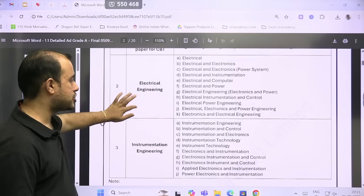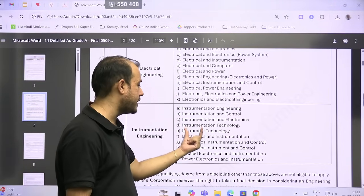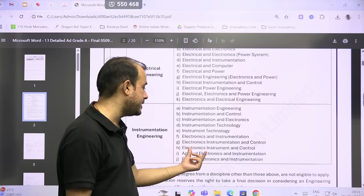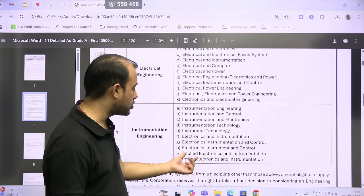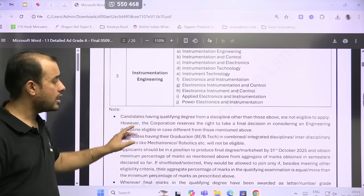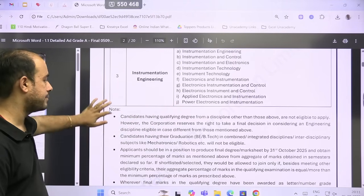Now for Instrumentation: instrumentation IC, instrumentation electronics, instrumentation technology, instrument technology, EI, EIC, applied electronics, power electronics and instrumentation. Now, if you are not from these domains, you are not eligible to apply.